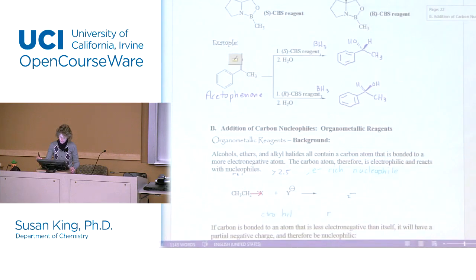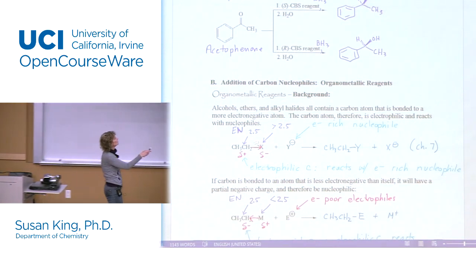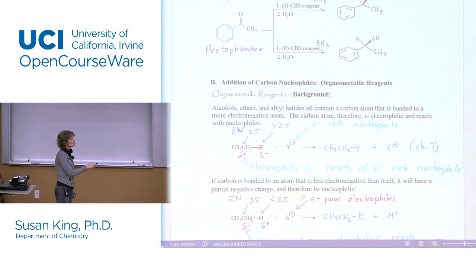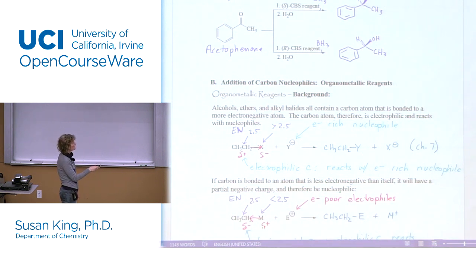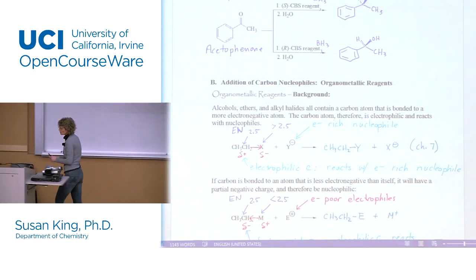We're still talking about irreversible additions to carbonyl compounds. We just started last time talking about organometallic reagents, where we have carbon alkyl groups bonded to metals. Because we bond the alkyl groups to metals, we change the polarity of the bond. Carbon bonded to a more electronegative group is partial positive, but if we change that to a metal from the left side of the periodic table, electrons flow the other direction, making electron-rich carbon.